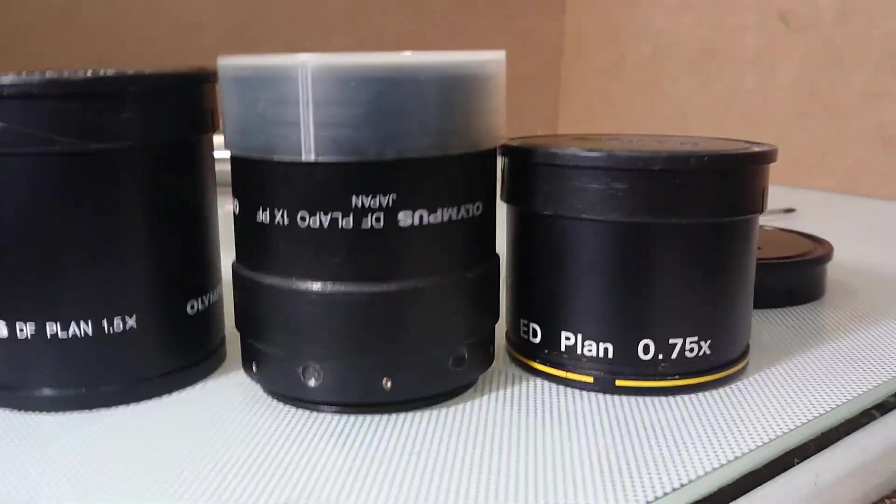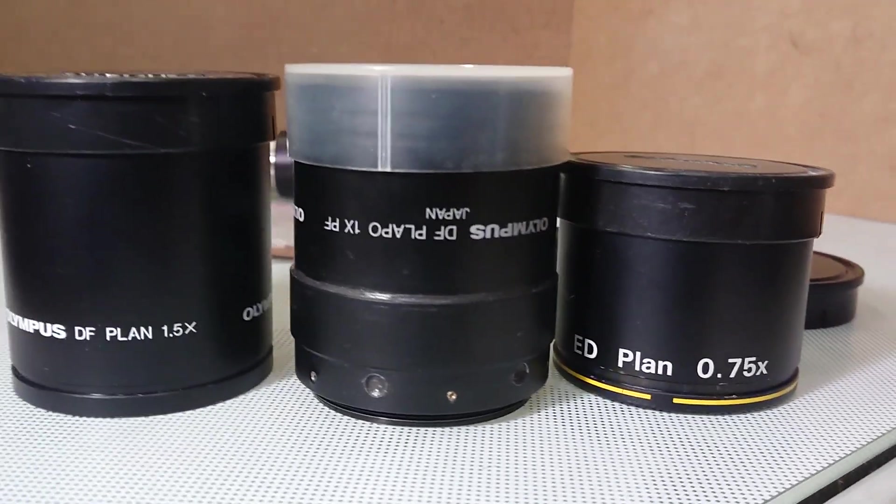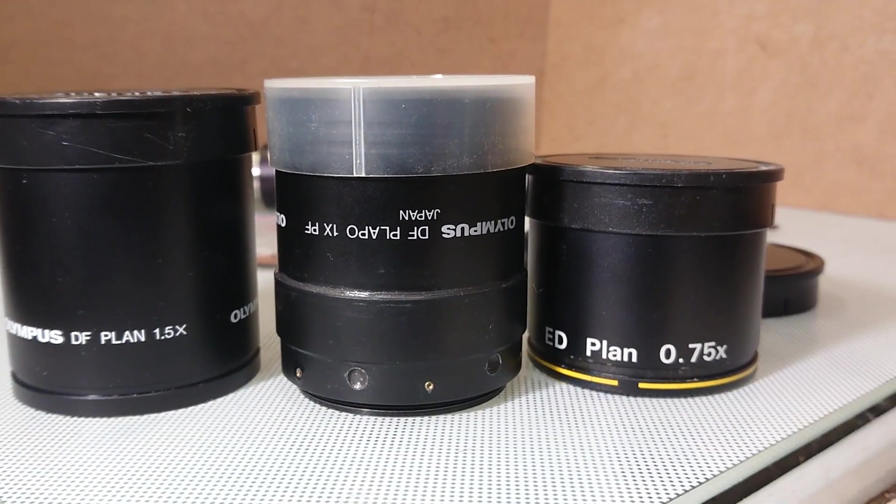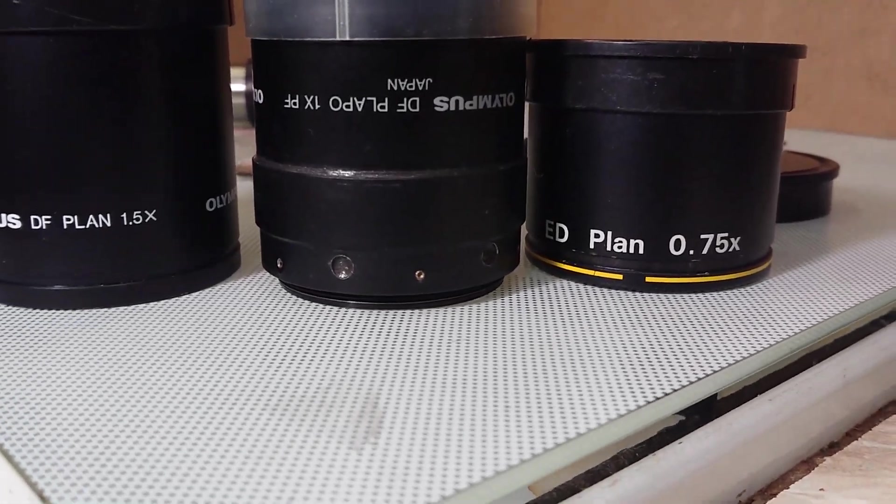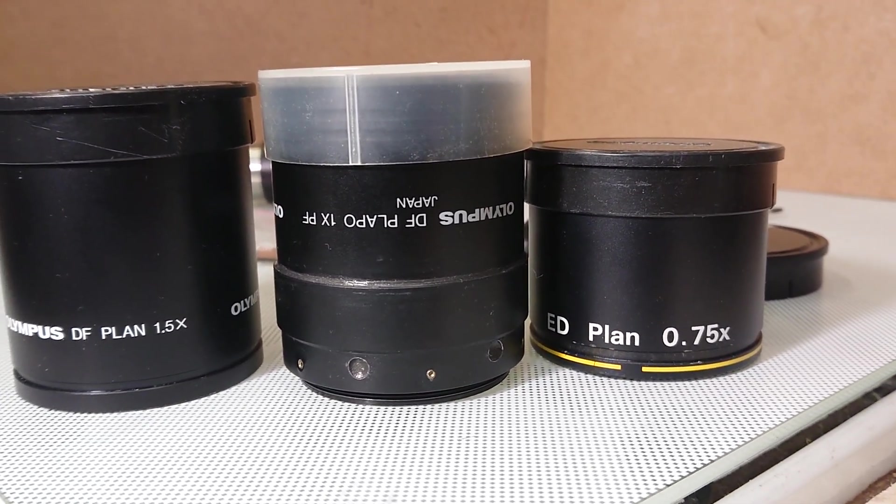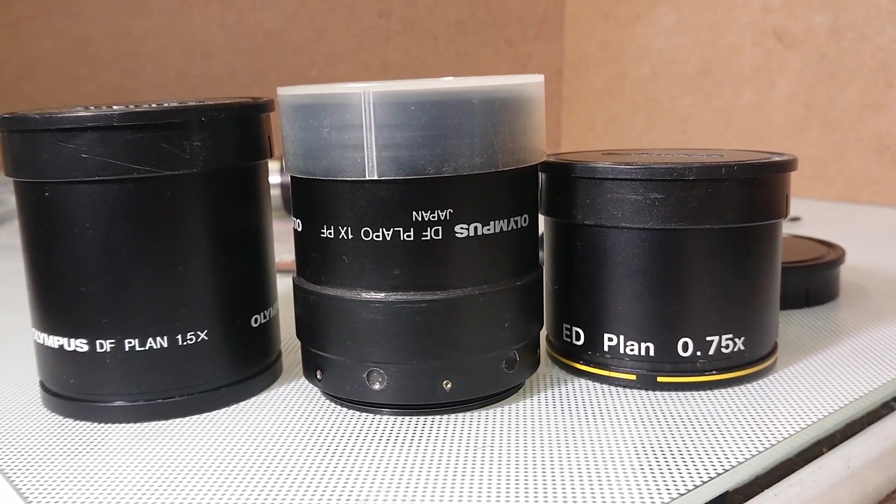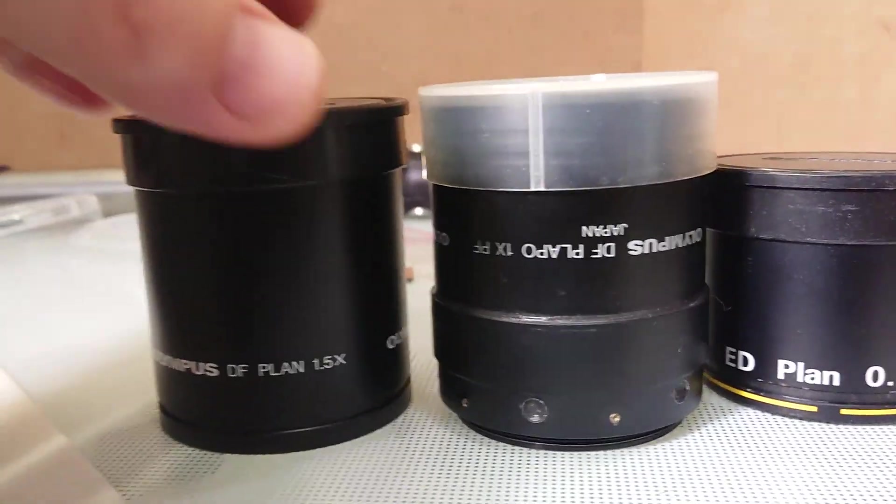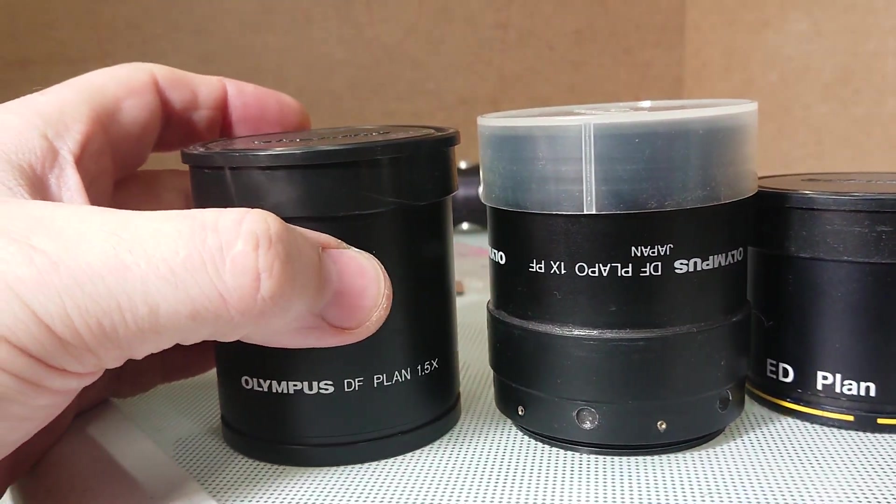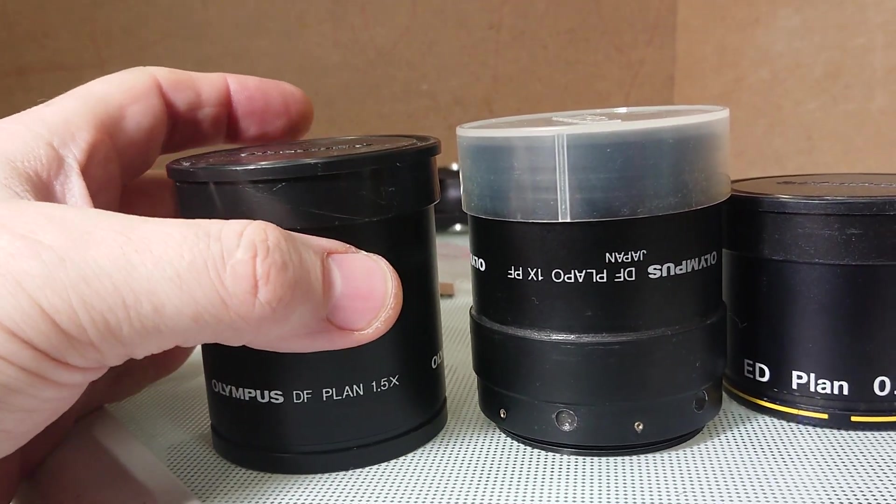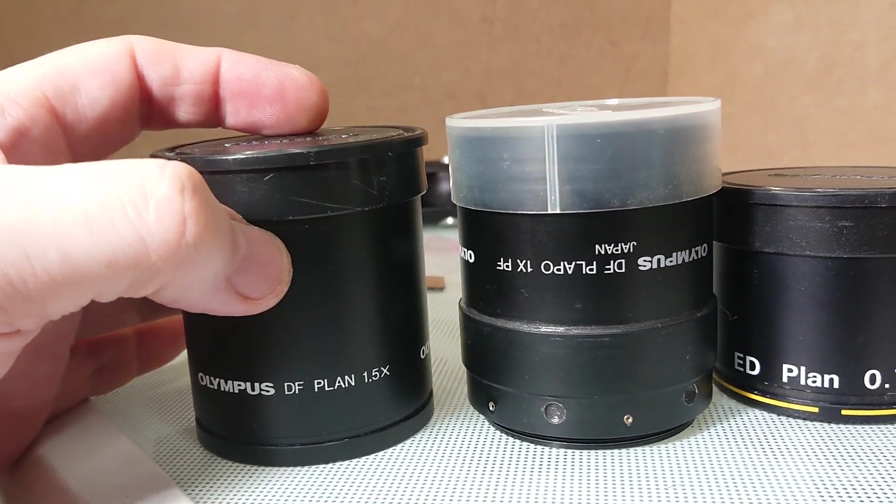Next is Olympus DFP-PL-APO-1X-PF. It's a base objective. It is a corrected one and it has 72 mm working distance.